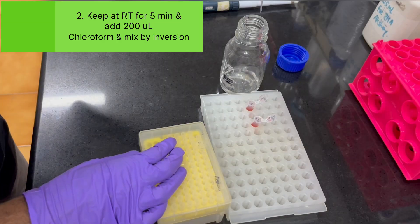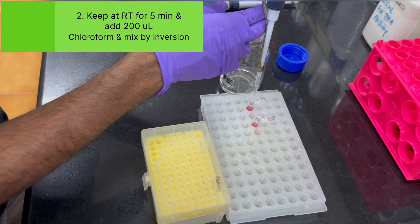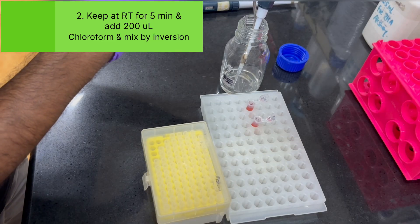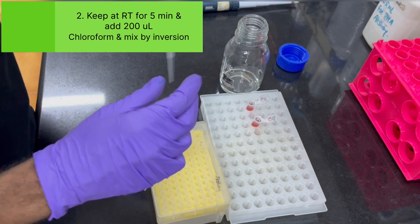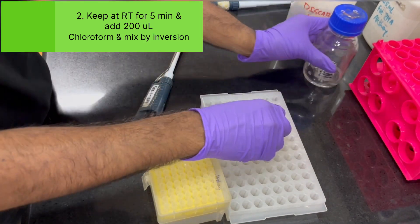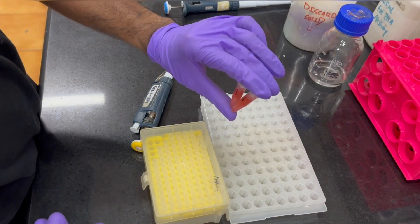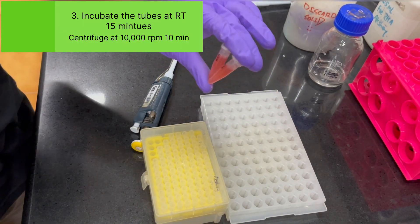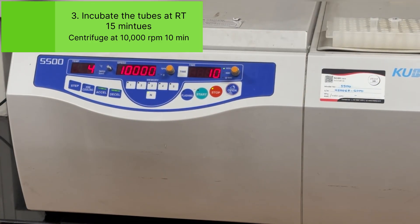After vortexing, keep it at 5 minutes at room temperature. Then add 200 microliter of chloroform into each tube. Make sure you are not touching the tube while adding the chloroform. And then close the tubes and do not vortex at this stage, just invert the tubes and keep it at room temperature for at least 10 to 15 minutes. Now centrifuge at 10,000 rpm for 10 minutes at 4 degrees Celsius. Then you will get three different layers.